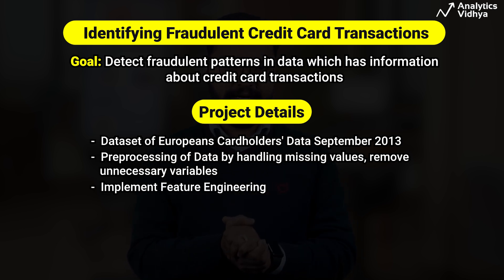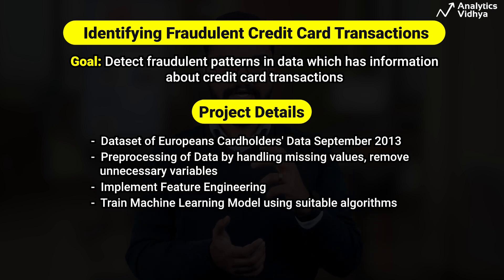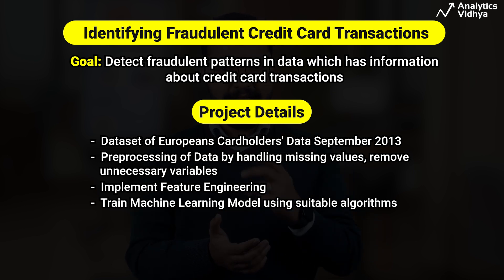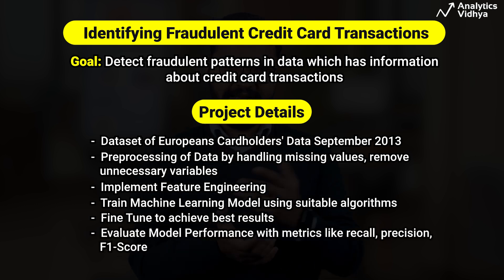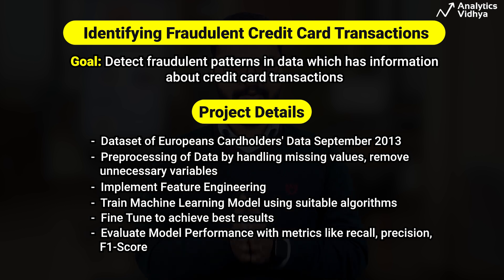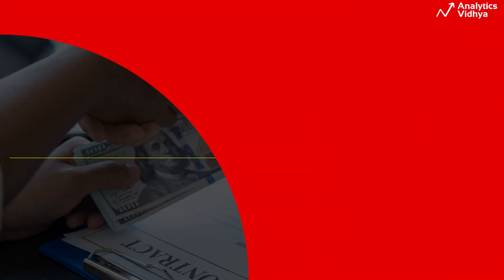After pre-processing, we implement feature engineering. Once this is done, we train our machine learning model using suitable algorithms, then fine-tune them to achieve the best results. Thereafter, we evaluate model performance on various metrics. This project will help you identify patterns that all fraudulent transactions share.